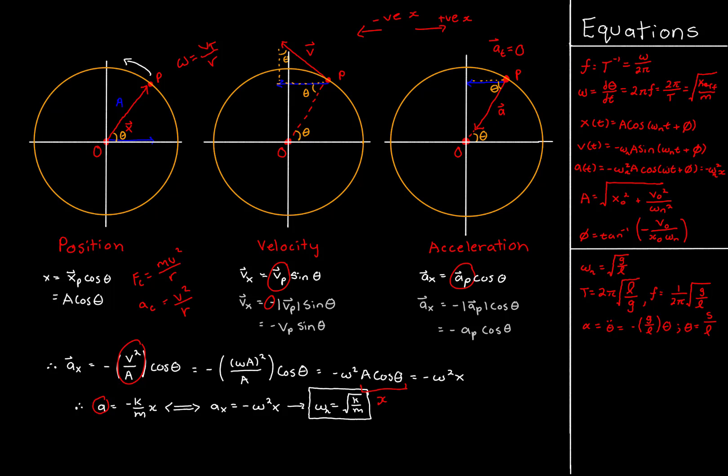We now have a_x in the form we already know. Comparing this with a equals negative k/m times x from SHM, and taking a_x as the horizontal projection representing simple harmonic motion along the x-axis, we get that omega, the natural angular frequency, must equal the square root of k over m. Hopefully this has convinced you that this is indeed true. Now let's move on to an example.